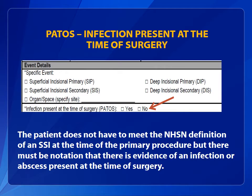PATOS, or Infection Present at the Time of Surgery, is a required field on the SSI event form. NHSN frequently receives questions about how to fill out the PATOS field. In this session, we will answer some of the most frequently asked questions. The patient does not have to meet the NHSN definition of an SSI at the time of the primary procedure, but there must be evidence of an infection or abscess present at the time of surgery.